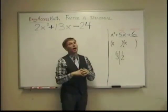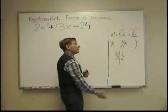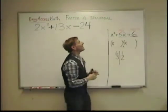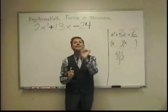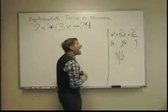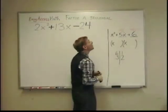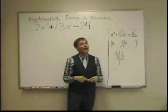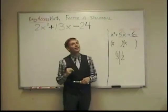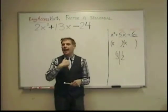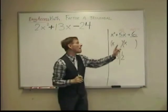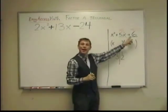to get a positive six, the signs would have to be the same. And the number adds up to a positive five. So, I pretty much know now that these two numbers are both positive. That's the only way they could add up to a positive and yet multiply to a positive as well.